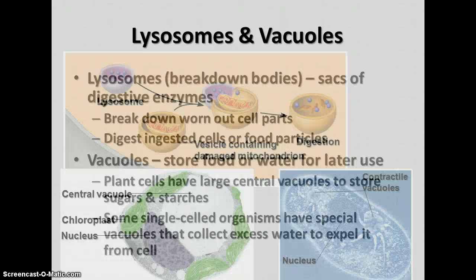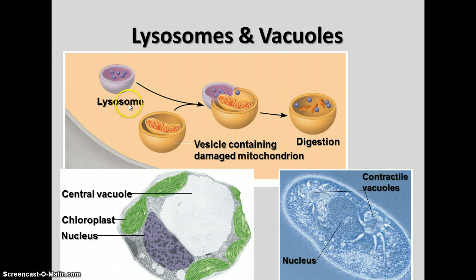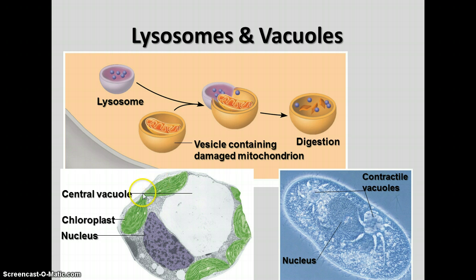Some single-celled organisms also have special contractile vacuoles that collect excess water and expel it from the cell. Here is a picture showing the progress of a lysosome breaking down a damaged mitochondrion — it fuses with the vacuole surrounding the worn-out cell part, and enzymes break the mitochondrion into parts that can be reused. On the left is a plant cell with its large central vacuole, chloroplasts, and nucleus. Here is a paramecium, a single-celled organism that lives in water, with contractile vacuoles that expel excess water from the cell.